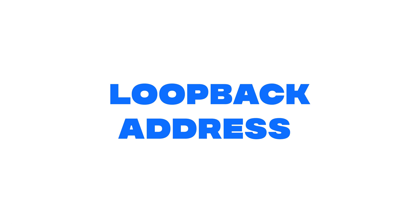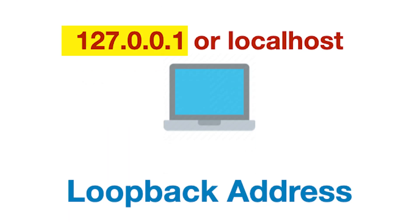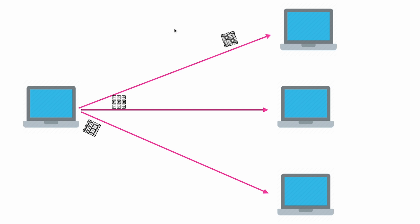Let's cover one more concept: the loopback address. As you can see on the screen, the loopback address is the address of your local machine. Even if your device is not connected to any network, it will still have its own loopback address. When you use the loopback address, you are not sending data or packets on the network — you are transmitting data within your local system only. That's why we call it the loopback address of your local machine.